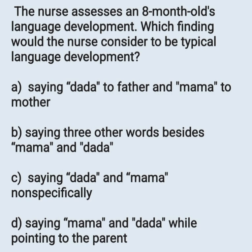The first question: A nurse assesses an 8-month-old's language development. Which finding would the nurse consider to be typical language development? Option A: saying dada to father and mama to mother. Option B: saying three other words besides mama and dada. Option C: saying dada and mama not specifically. Option D: saying mama and dada while pointing to the parent.